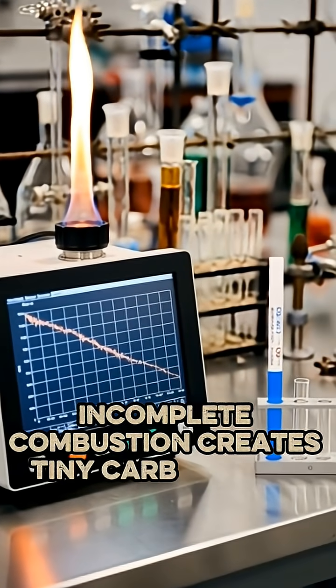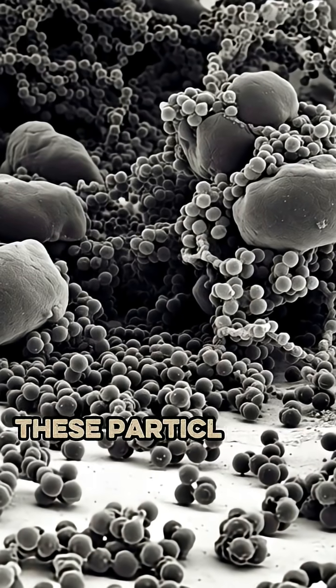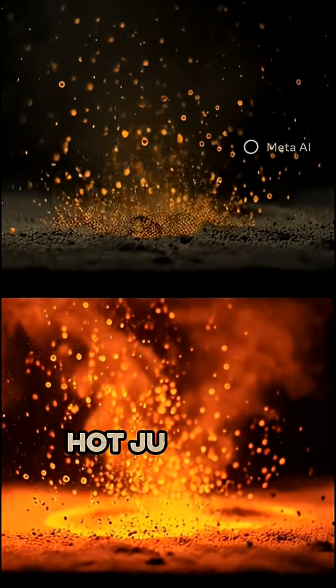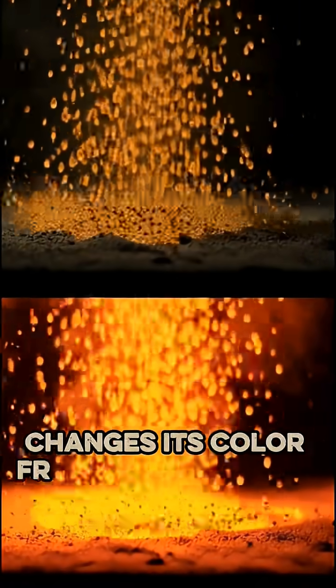Incomplete combustion creates tiny carbon soot particles. These particles get superheated and glow yellow hot, just like heating metal changes its color from red to yellow.